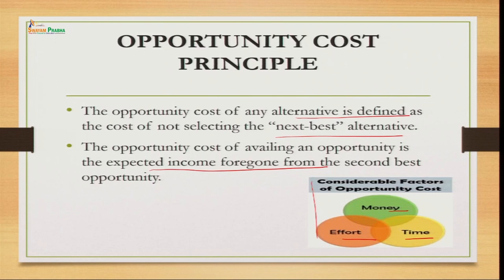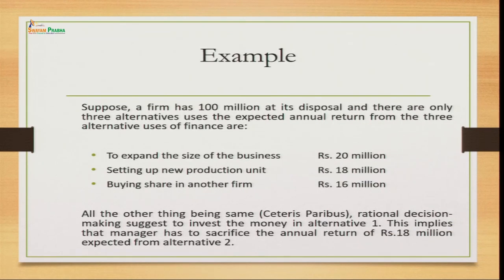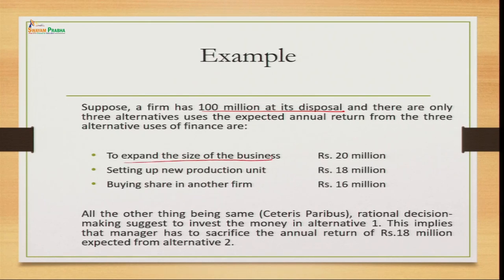Let me give you one example. Suppose there is a firm having 100 million at its disposal, and this firm has three alternatives. The first: they can use this money to expand the size of their existing business, with an expected return of 20 million. The second: setting up a new production unit, with an expected return of 18 million.